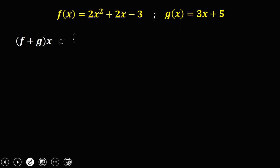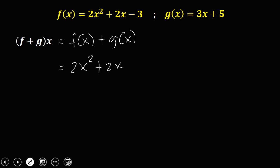So this equation is equal to f of x plus g of x. Then substitute the value. So for f of x, we have 2x squared plus 2x minus 3, then plus g of x, that's 3x plus 5.